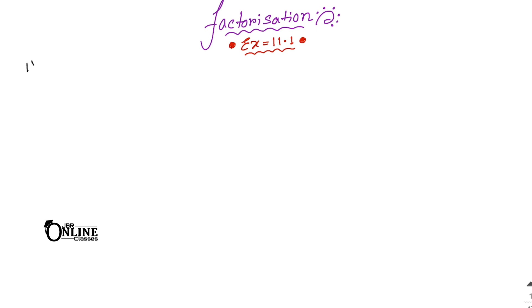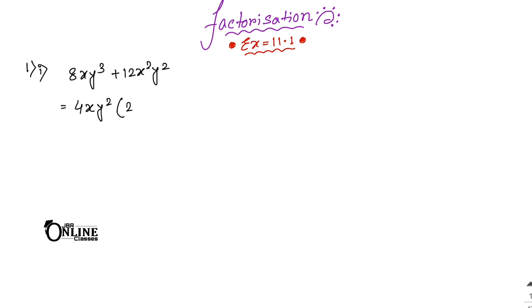Sum number 1.1: 8xy³ + 12x²y². In factorization, first find the common terms. The HCF of 8 and 12 is 4. Then x is common to both terms, and y² is the smallest power of y. So write down 4xy². Inside the bracket: 4 twos are 8, so 2y; and 3 from 12, leaving 3x. The answer is 4xy²(2y + 3x).